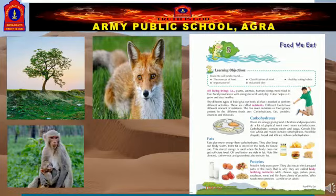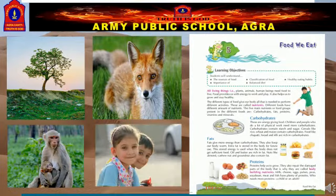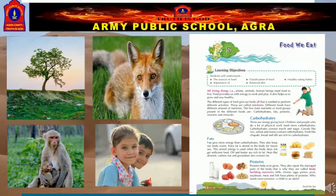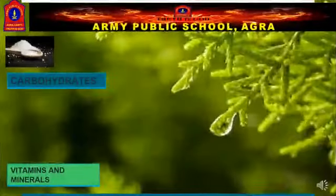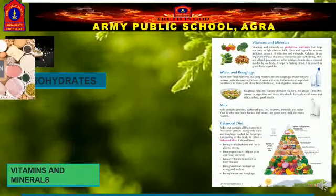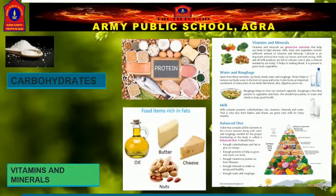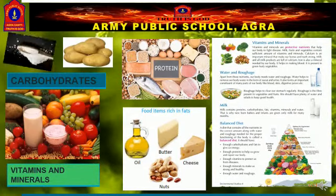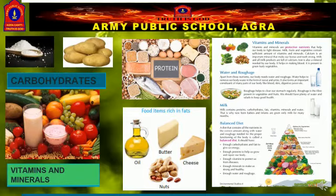Different types of food consumed by plants, animals and human beings for their different activities are called nutrients. The five main nutrients are carbohydrates, proteins, fats, vitamins and minerals.